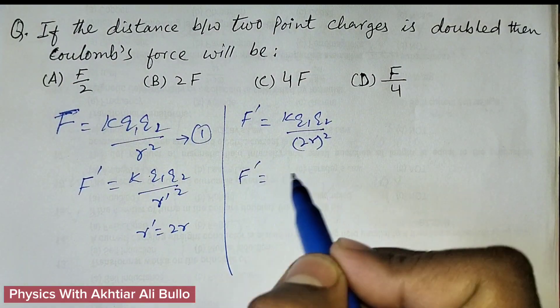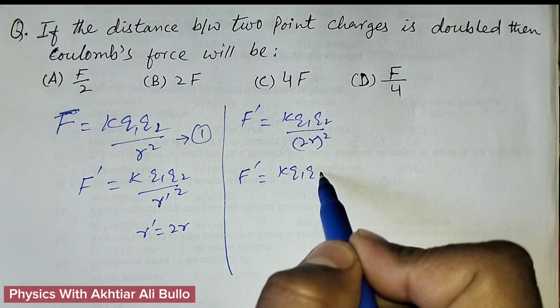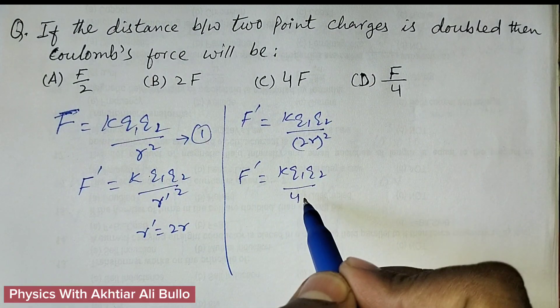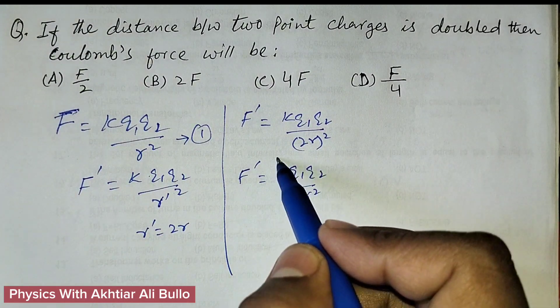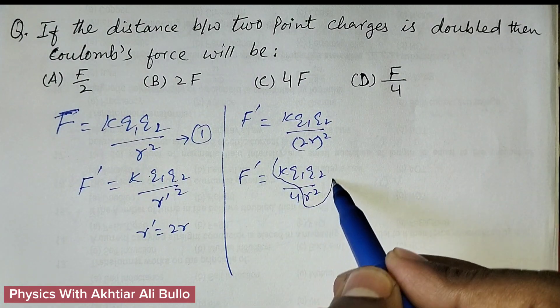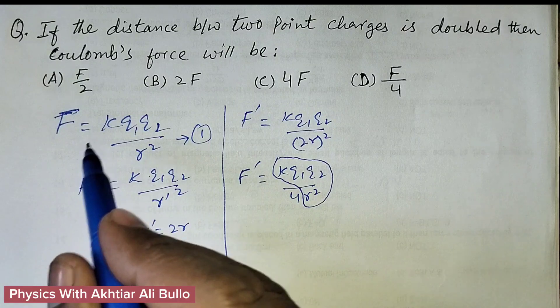So F dash will be equal to K Q1 Q2 upon 4R square. As K Q1 Q2 upon R square is equal to F.